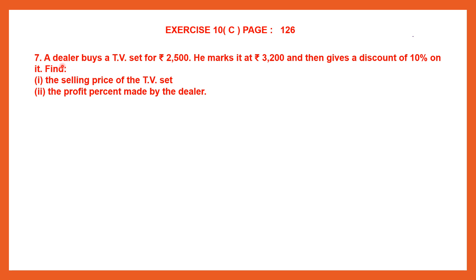Question 7. A dealer buys a TV set for Rs. 2,500. He marks it at Rs. 3,200 and then gives a discount of 10% on it. We have to find two answers. 'Buys' means that is the cost price. 'Marks it' means marked price — the price put on the label initially — and then the seller decides whether to give a discount or not, and finally we get the selling price. So here we have the cost price, the marked price, and the discount.